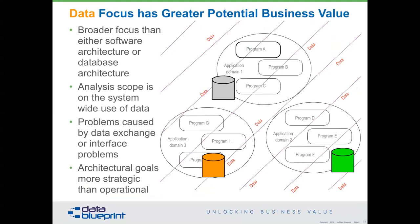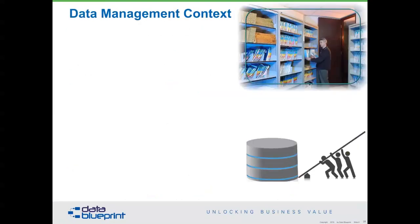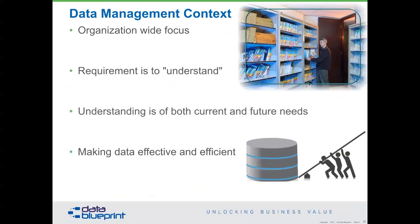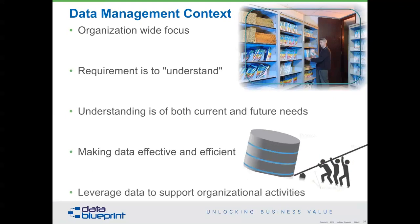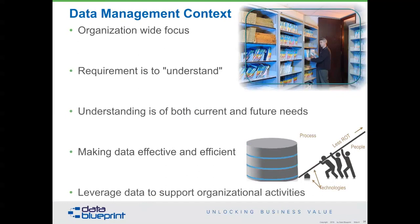The goals of the architectural effort are much more strategic than operational. The key for data management is to retain an organization-wide focus. Ensure machines understand the same as people, and business people understand the same as technical people. Understand current and future needs, because the goal is to make data more efficient and effective. Our most recent surveys published in Forbes in January/February 2019 show that organizations now rate this as a people-and-process problem — 95% of problems — with technology being only 5%.